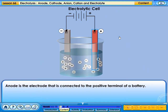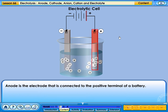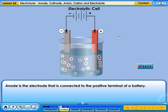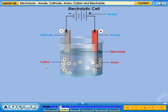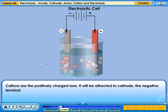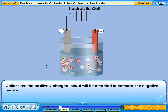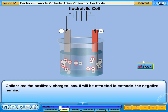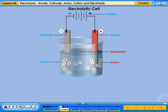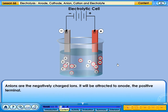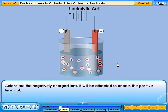Anode is the electrode that is connected to the positive terminal of a battery. Cations are the positively charged ions — they will be attracted to the cathode, the negative terminal. Anions are the negatively charged ions — they will be attracted to the anode, the positive terminal.